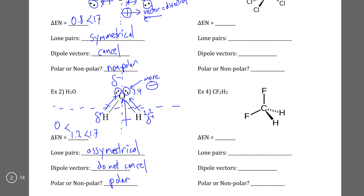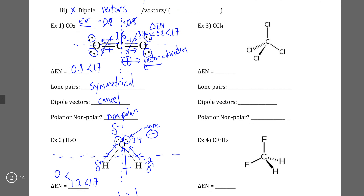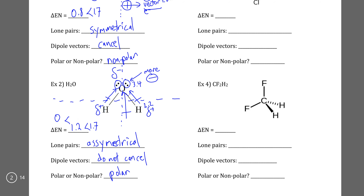Before we move on to the next video, there are two additional practice problems: carbon tetrachloride and difluoromethane. One of these molecules is polar and the other one is non-polar. See if you can use lone pair asymmetry, difference in electronegativity, and the direction of the dipole vectors in order to find out which is the polar molecule and which is the non-polar molecule.